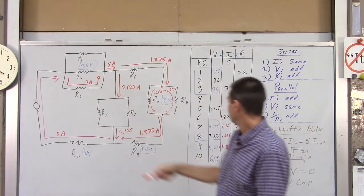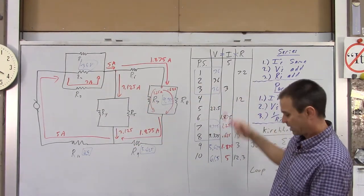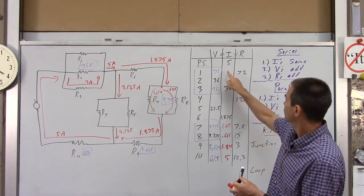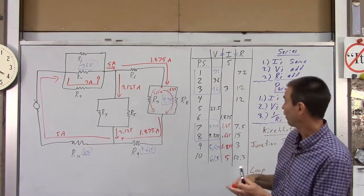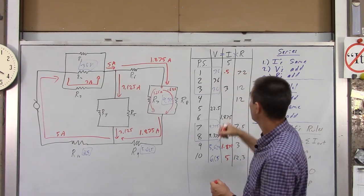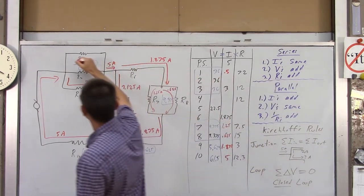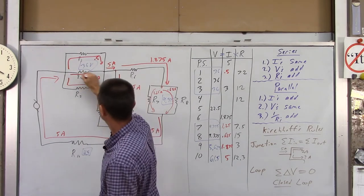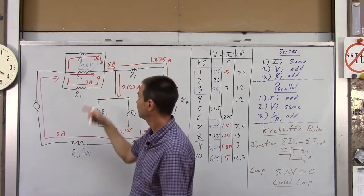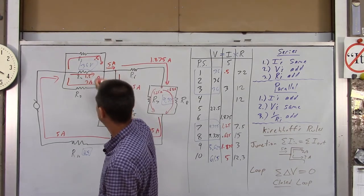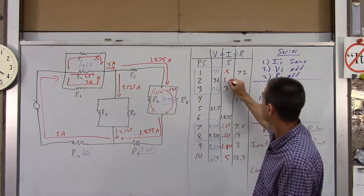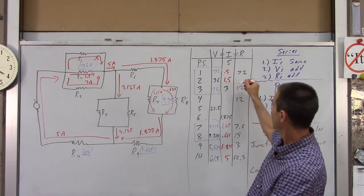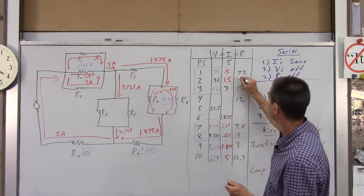Now going back up to this little branch right there, I know this resistance now is 12 ohms. What times 72 gives you 36? Well, that's 0.5. So this here has to be 0.5 amps. So that's the current through R1. Well, I know the current going through here then because these three have to add to 5. So 3 plus 0.5, this has to be 1.5 amps. So the current through R2 has to be 1.5 amps. Therefore, if I do this divided by that, you're going to get 24 ohms.